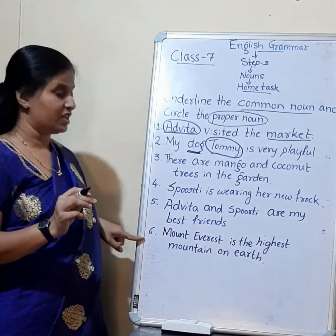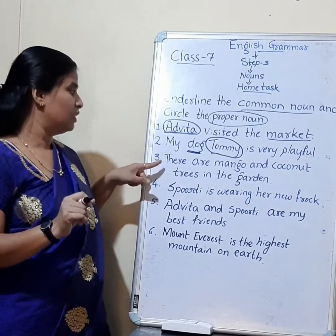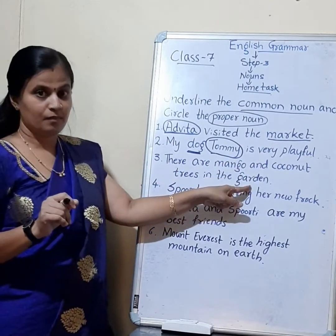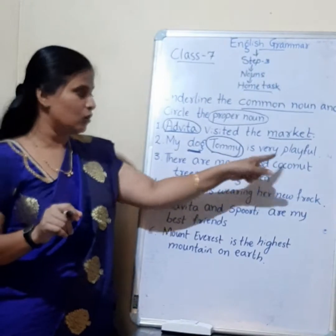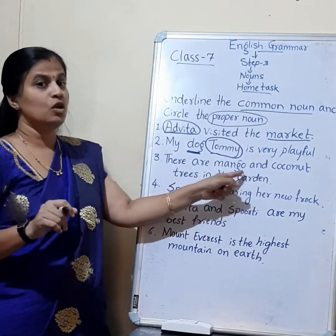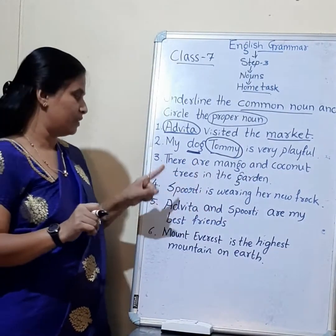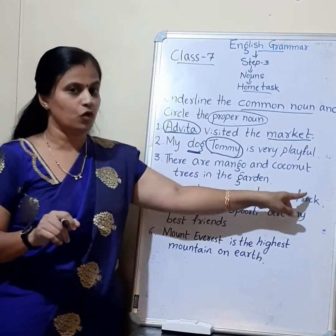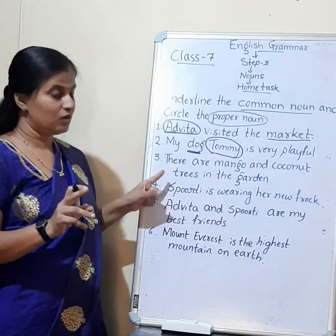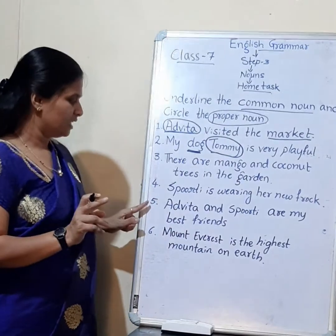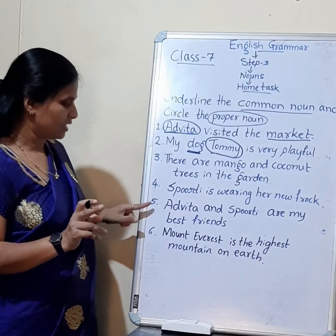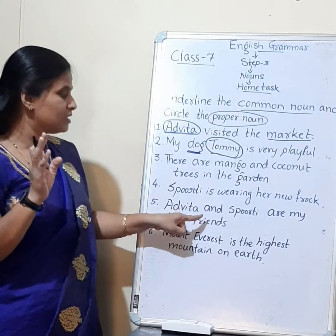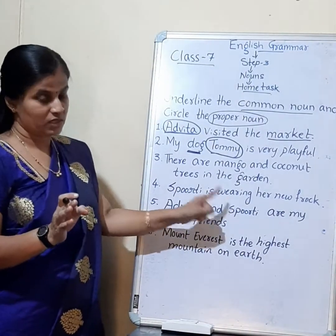I hope you all are going to solve the rest. Let me just read the sentences. 'There are mango and coconut trees in the garden.' You have to find out the common noun as well as the proper noun. Next sentence: 'Spurti is wearing her new frock.' Find out the proper noun as well as the common noun. And: 'Adrita and Spurti are my best friends.' You have to find out which one is the common noun and which one is the proper noun.